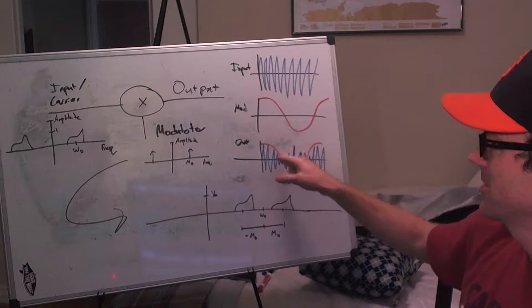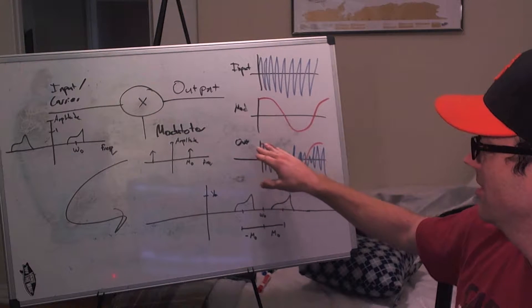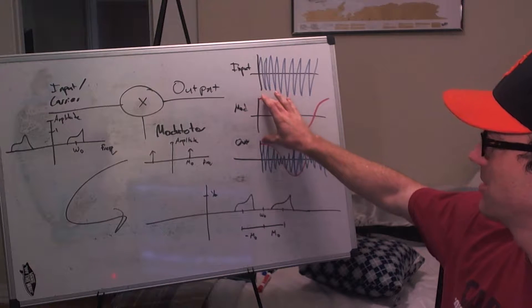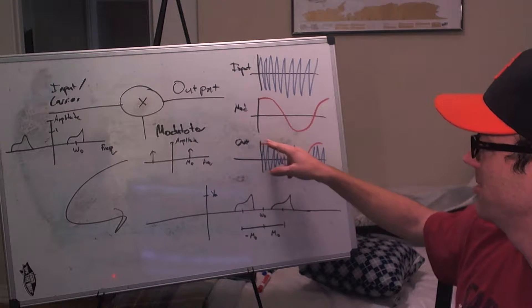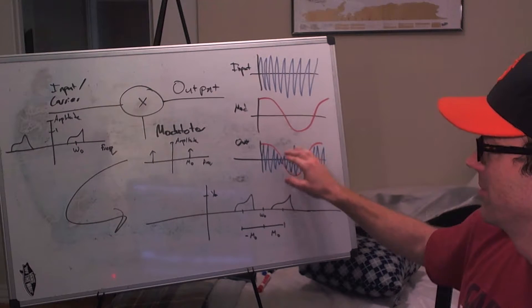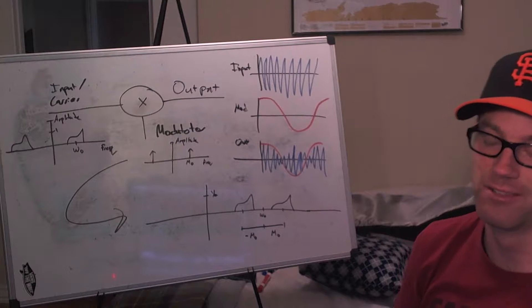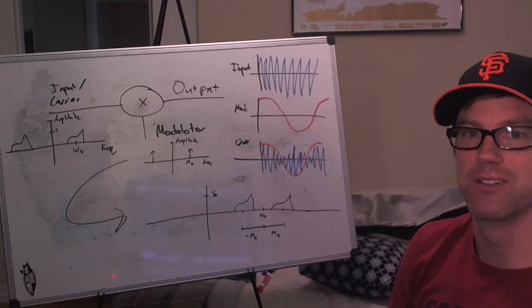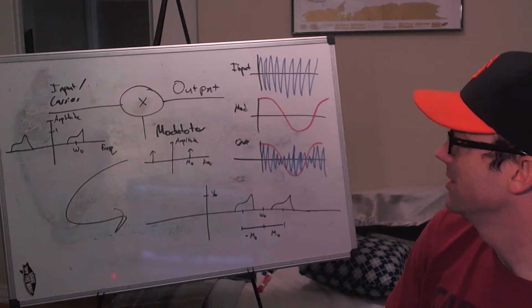What it does is it actually acts as sort of an envelope on your signal. So you can see here that the amplitude is high when the modulating signal is high, but then as the modulating signal goes to zero, so does the amplitude of your input. And the result is that you get kind of this almost a gating sound on your signal.